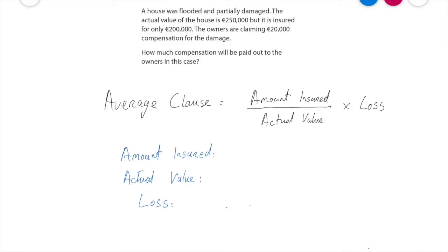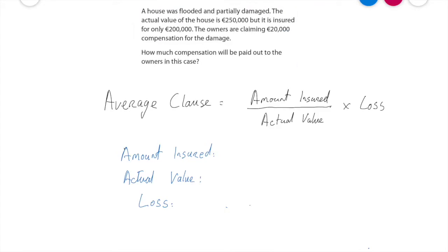In this question we can see clearly that the owners of the house haven't insured the house for the full value, so they're not going to get the full €20,000 they're claiming in compensation. We have here a formula for average clause. The formula is: the amount insured over the actual value, multiplied by the loss.